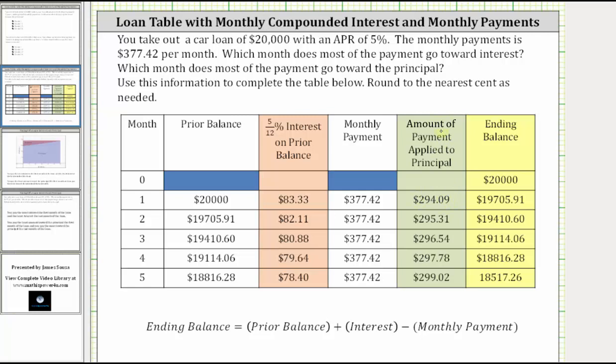After the first month, the loan is reduced to $19,705.91. Then at the end of the second month, you must pay one month's interest on $19,705.91. And 5/12 percent of $19,705.91 is $82.11. So when you make the second payment of $377.42, you pay $82.11 in interest, which means now $295.31 is applied toward the principal or reducing the loan amount.